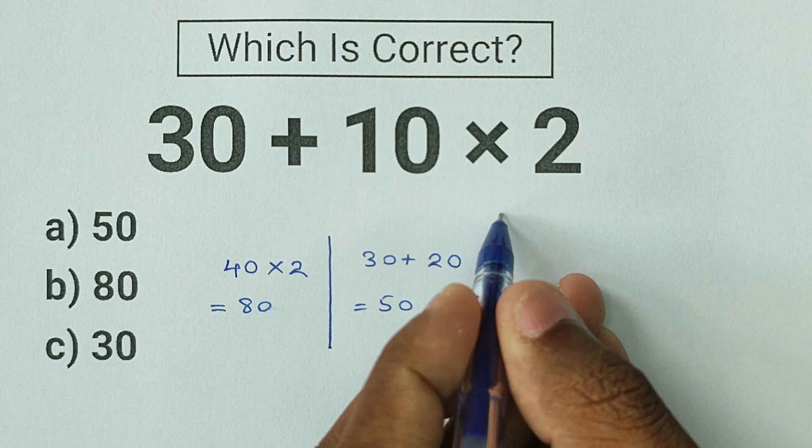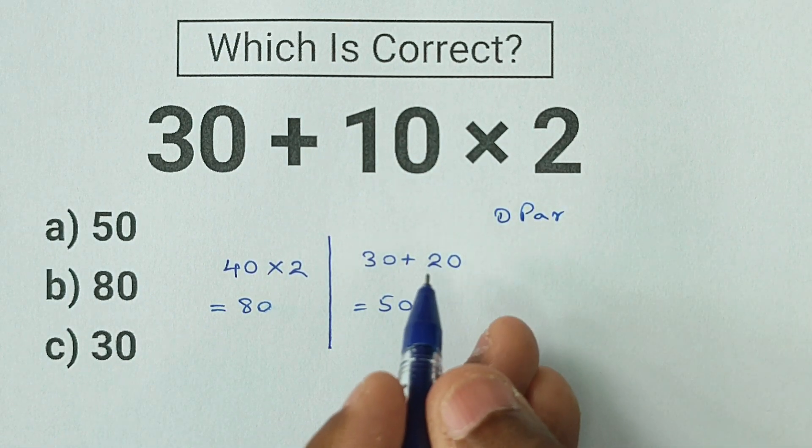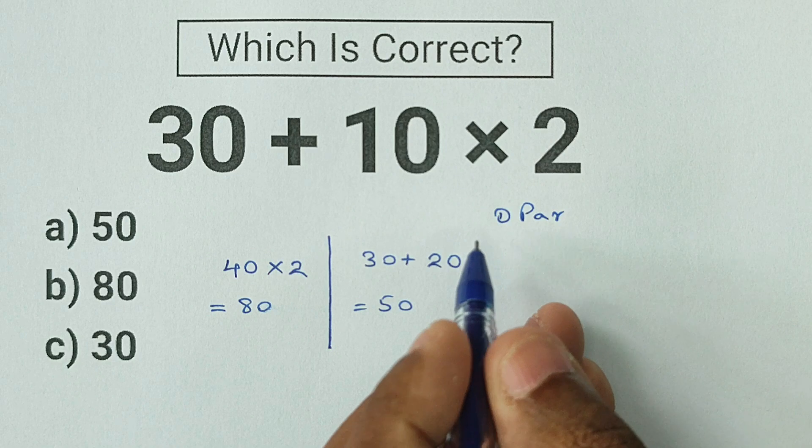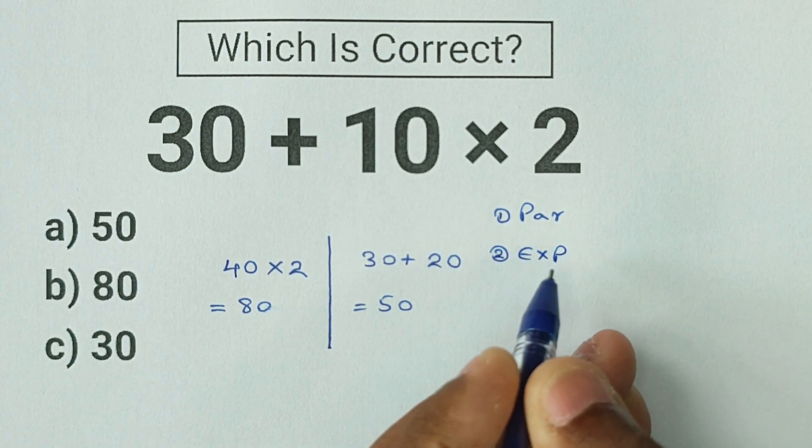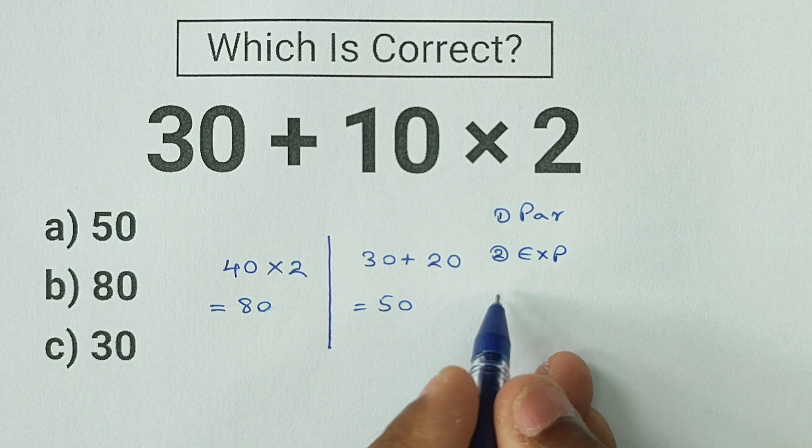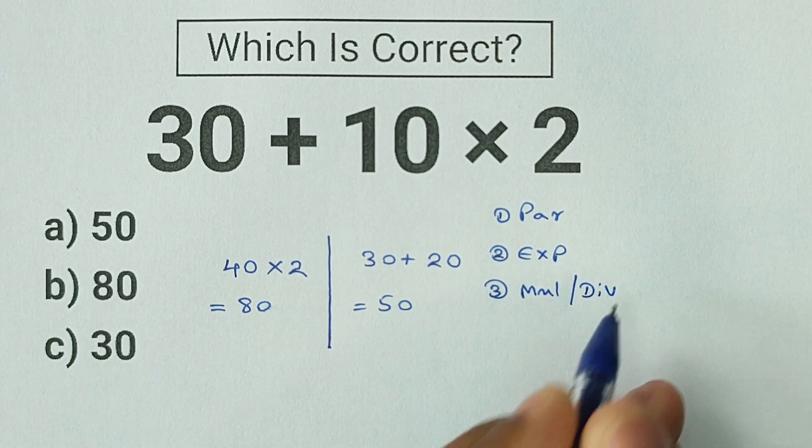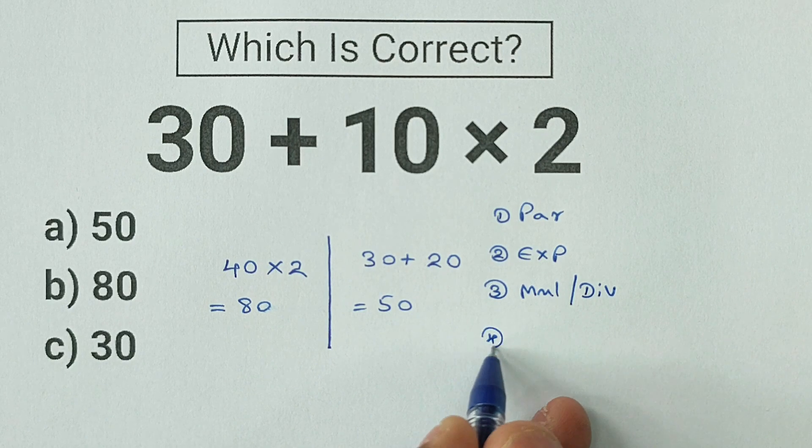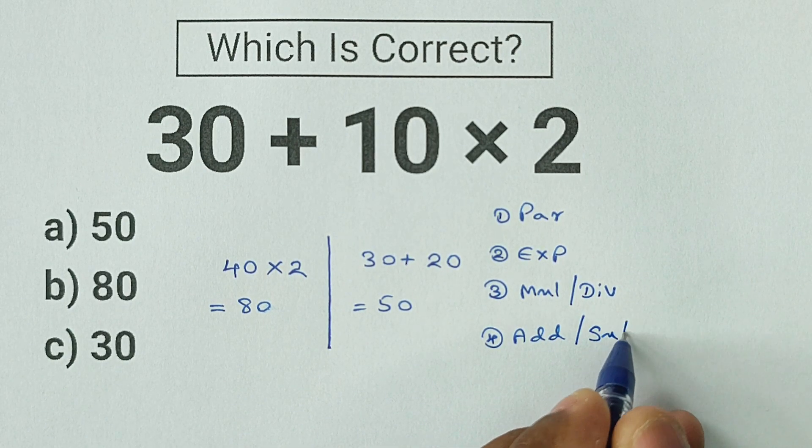The first of our list of the order of operations is parentheses. The first thing we must do is to get rid of the parentheses. Second on our list is exponents. If you don't know what an exponent is, don't worry about it. The third of our order of operations is multiplying and dividing. And after you multiply and divide, our fourth order of operations is adding and subtracting.